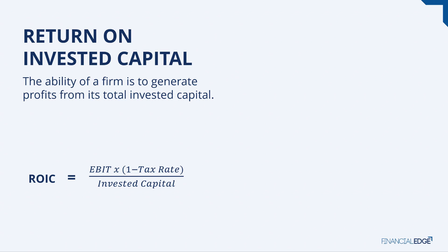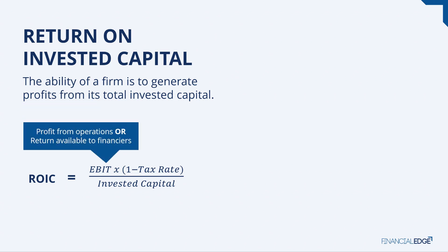This numerator — EBIT times one minus the tax — is sometimes called EBITA, earnings before interest but after tax, or sometimes called NOPAT, net operating profit after tax. Why do we need EBIT after tax? We have to think about this as the profits from operations, or the return available to financiers.